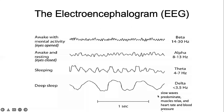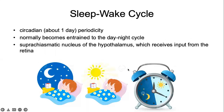During deep sleep, slow waves predominate, your muscles relax, and your heart rate and blood pressure also slow down, because it's the time your body is able to rest.